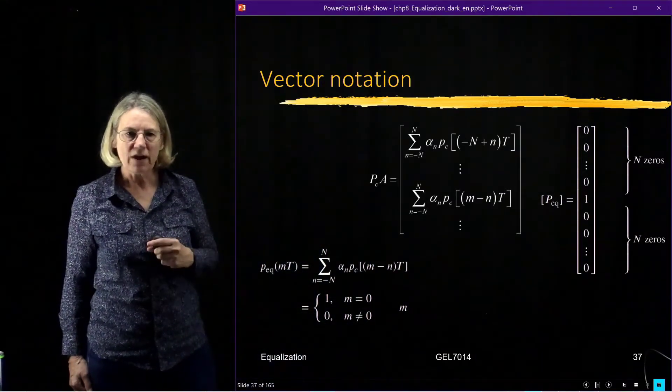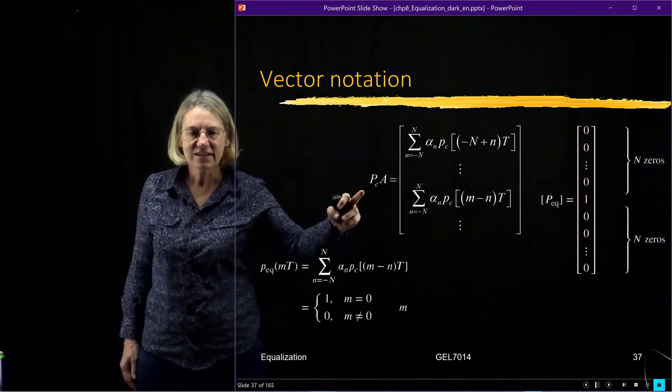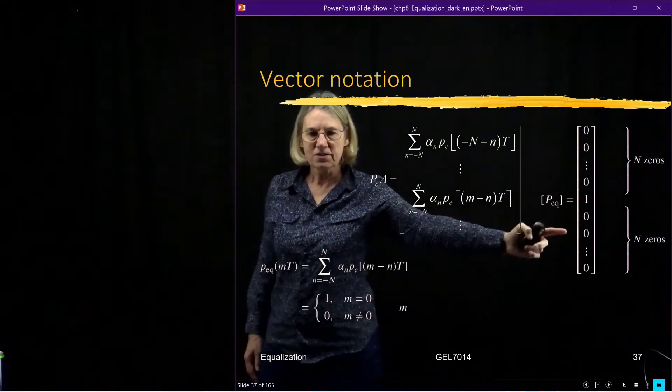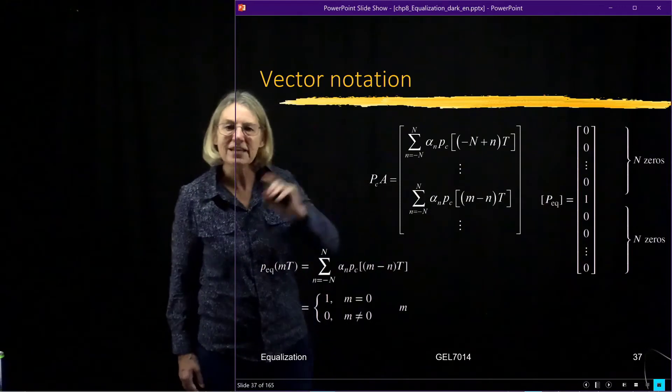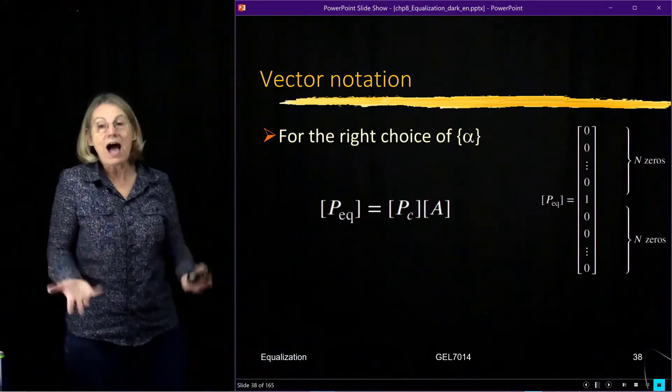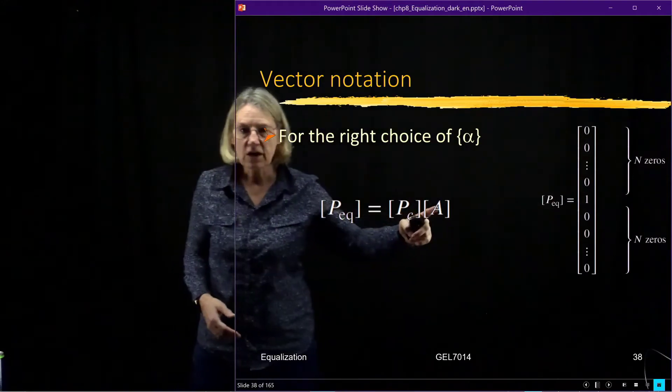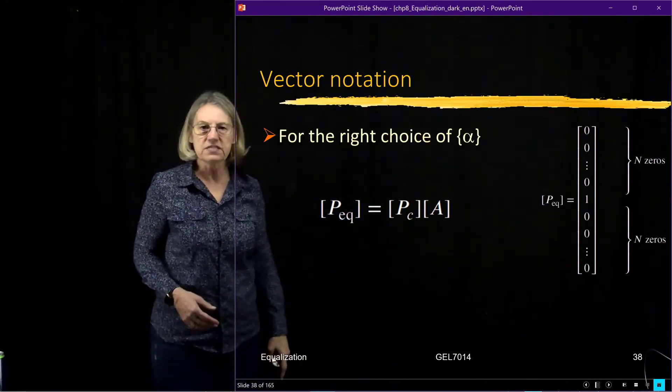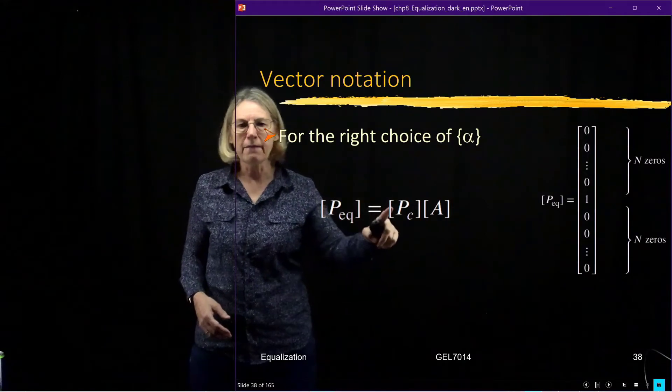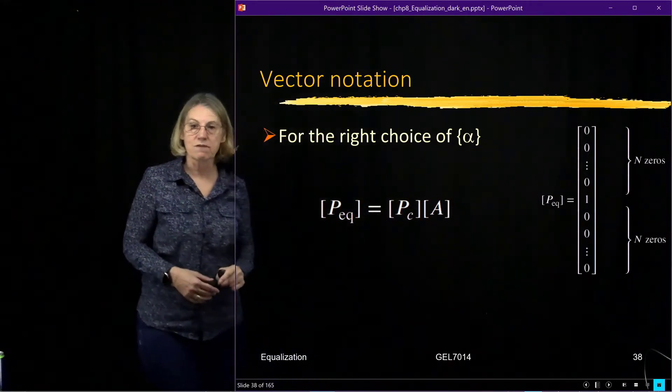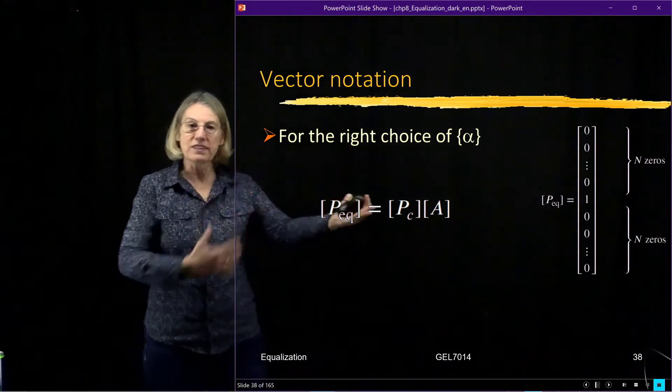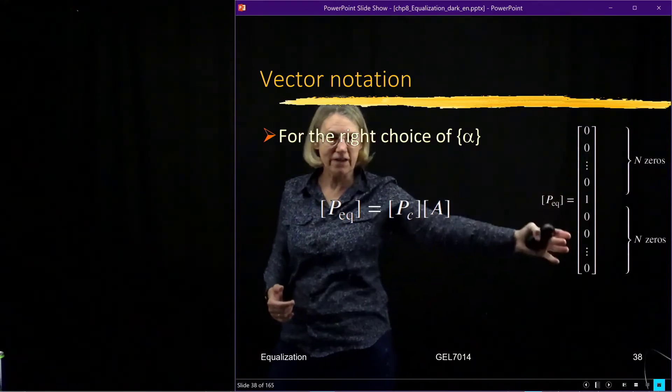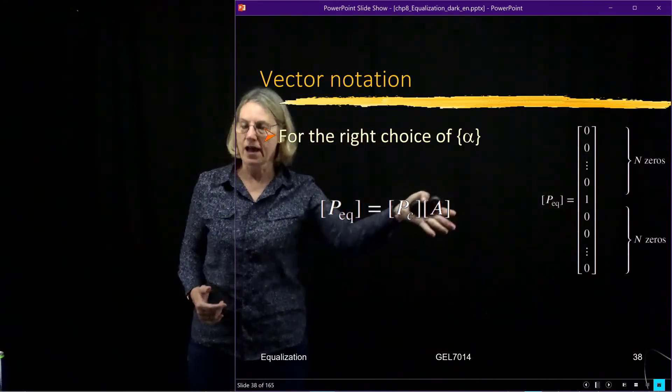Now, I can write a simple equation. I want this result of P_C times A to equal this result. So this is the vector that I want to get when I multiply these two together. So that means that now I have a way of finding what are the coefficients A. So my knowledge of the channel allows me to write P of C. And from the P of C, suppose I pre-multiply both sides of this equation by the inverse of the matrix P_C. In that case, I'm going to be left with A alone on this side. So I know what this is. It's just this impulse response vector. And if I pre-multiply it by P_C inverse, I know what I want for A.